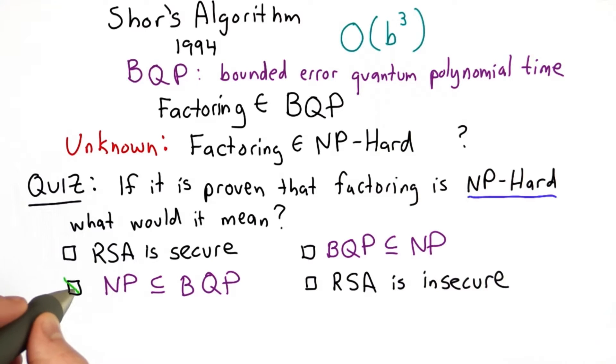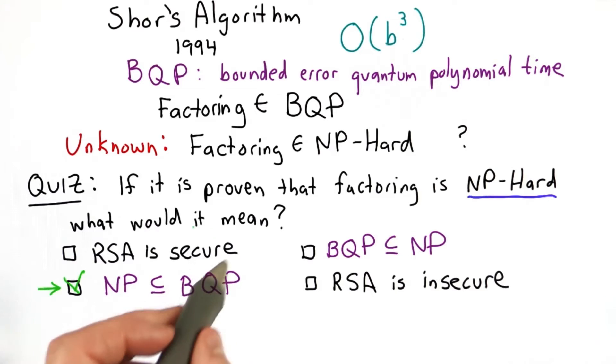So the answer is it would mean that NP is a subset of BQP. It wouldn't mean that RSA is secure.